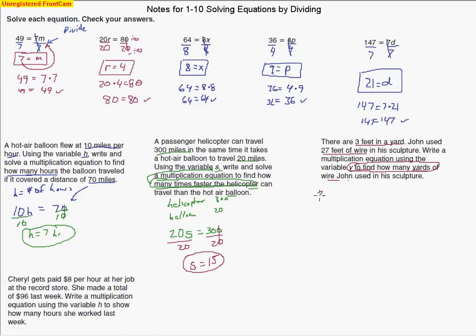There's 3 feet in 1 yard times by the number of yards he used equals the number of feet he ended up using altogether, 27 feet of wire. So all we have to do is divide by 3. Y is 9. So 9 yards of wire he ended up using.